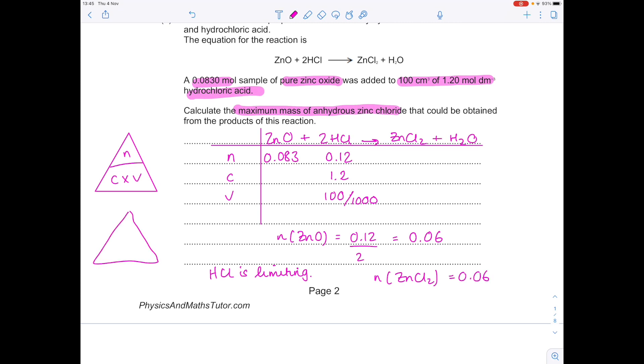And then that formula triangle we used before, which states that mass is number of moles times MR. Well, we're after the mass. So we do the number of moles we calculated times by the MR of zinc chloride. So that's 65 plus 35.5 times 2, to get 136, which gives us a value of 8.16 grams.